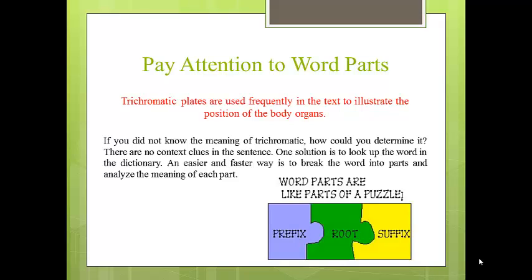An easier and faster way is to break the word into parts and analyze the meaning of each part. Many words in the English language are made up of word parts called prefixes, roots, and suffixes. These word parts have specific meanings that, when added together, can help you determine the meaning of the word as a whole.